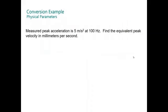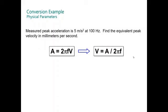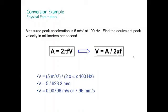One example: you have a measurement of 5 meters per second squared at 100 hertz. Find the equivalent peak velocity in millimeters per second. The acceleration is 2πf times velocity. Now the velocity is acceleration divided by 2πf. The velocity is 5 meters per second squared divided by 2π times 100 hertz, or 0.00796 meters per second or 7.96 millimeters per second.